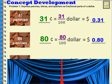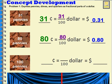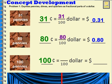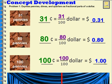What if we had one hundred pennies? One hundred pennies would be equal to one hundred cents. That would be one hundred hundredths of a dollar. And if we wrote that with a dollar sign, we would write it as one decimal zero zero, or one dollar.